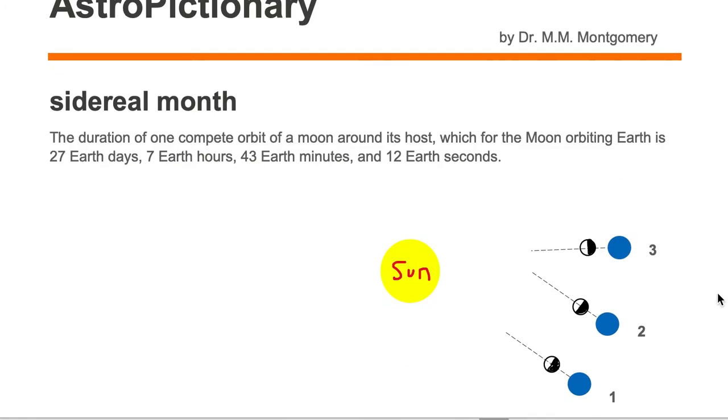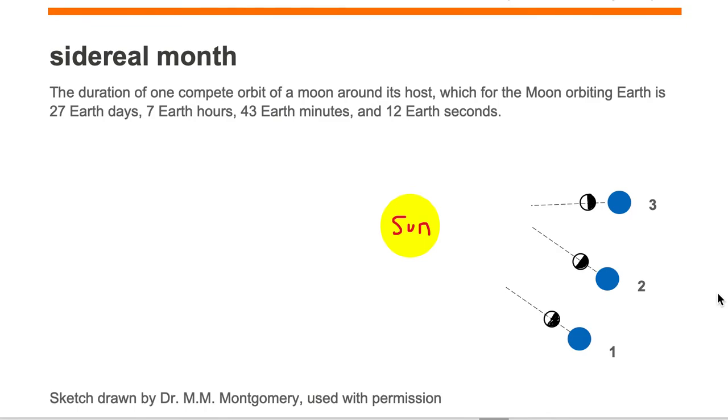Let's take a look at the sidereal month using the Earth-Moon-Sun system. Here we're looking at the position of Earth in its orbit around the sun, and we have labeled three different positions of this Earth going around the sun. The sun is the yellow-colored object, the blue-colored object is the Earth, and the half-black, half-white object is the moon.